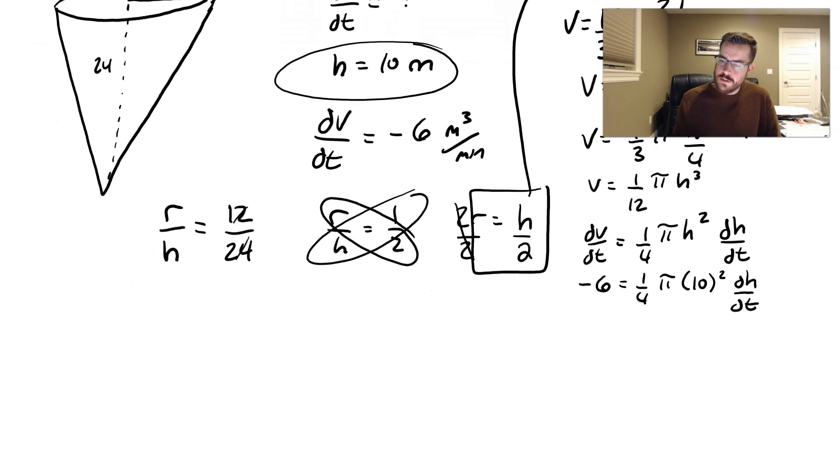So let's actually finish this out here. So we're going to get -6 equals 10 squared is 100. 100 times a fourth is going to just be 25. So it becomes 25π dh/dt.